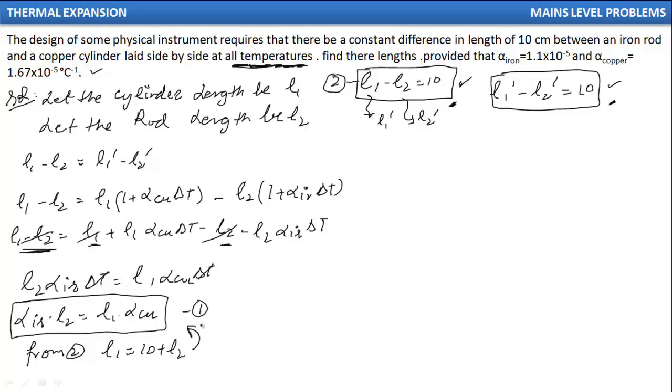Now I substitute this in this relation. So accordingly I get alpha iron × L2 equals L1, and L1 equals 10 plus L2, multiplied with alpha copper.